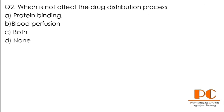Question number two: which does NOT affect the drug distribution process? Option A: protein binding. Option B: blood perfusion. Option C: both. Option D: none.